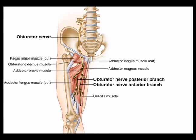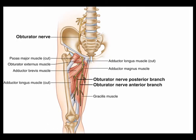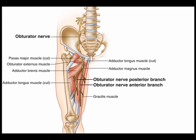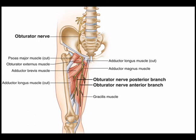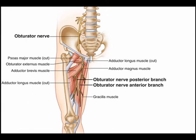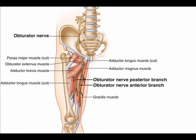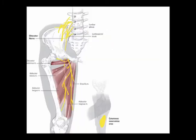The anterior branch continues its course between the adductor longus and adductor brevis, and eventually terminates as the cutaneous branch of the obturator nerve. The posterior branch travels between the adductor brevis and the adductor magnus.